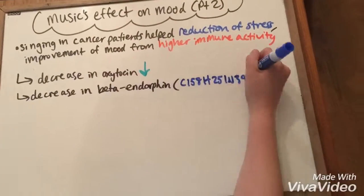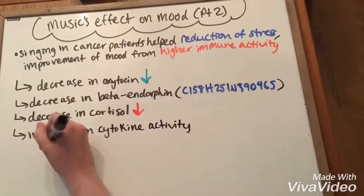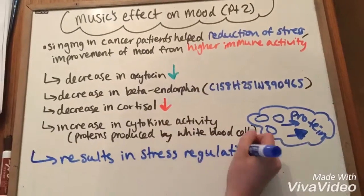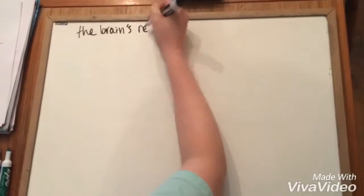Singing helped with the reduction of stress in cancer patients and caused an improvement of mood from higher immune activity. This was caused through a decrease in oxytocin, beta-endorphin, and cortisol, and an increase in cytokine activity. Combined, this caused stress regulation and improvement in mood.